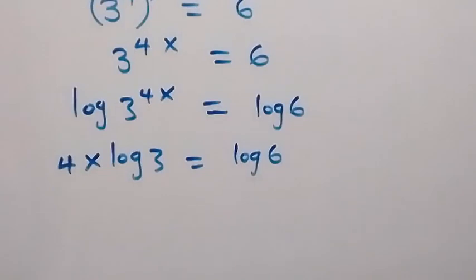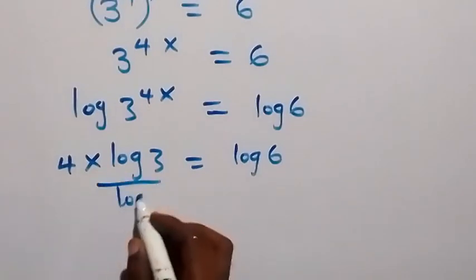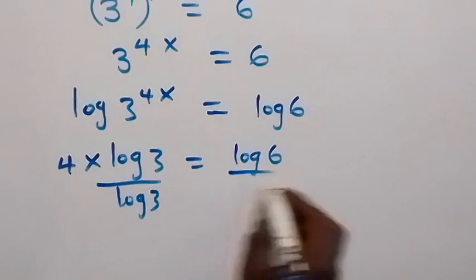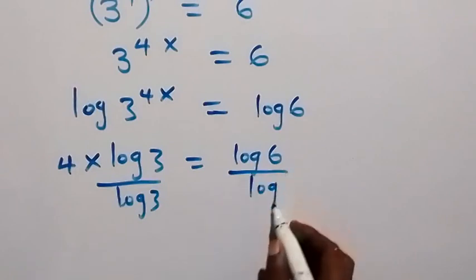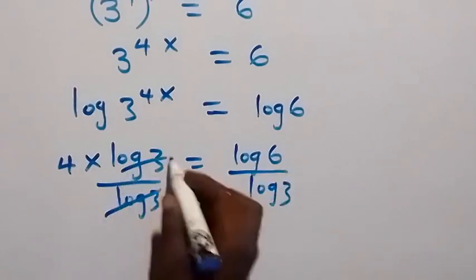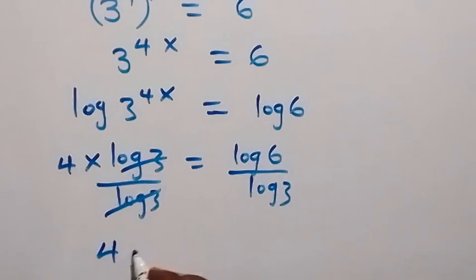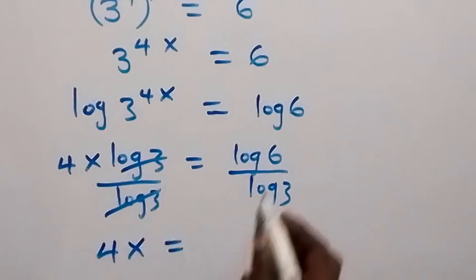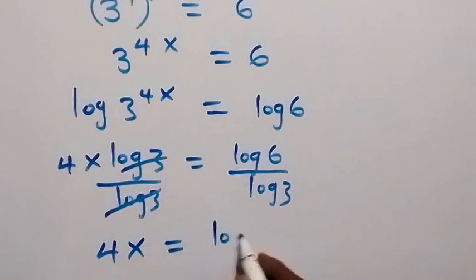Then, let's divide both sides by log 3. Log 3 cancels out here, leaving 4x equals log 6 over log 3. We can write log 6 as log of 3 times 2, over log 3.